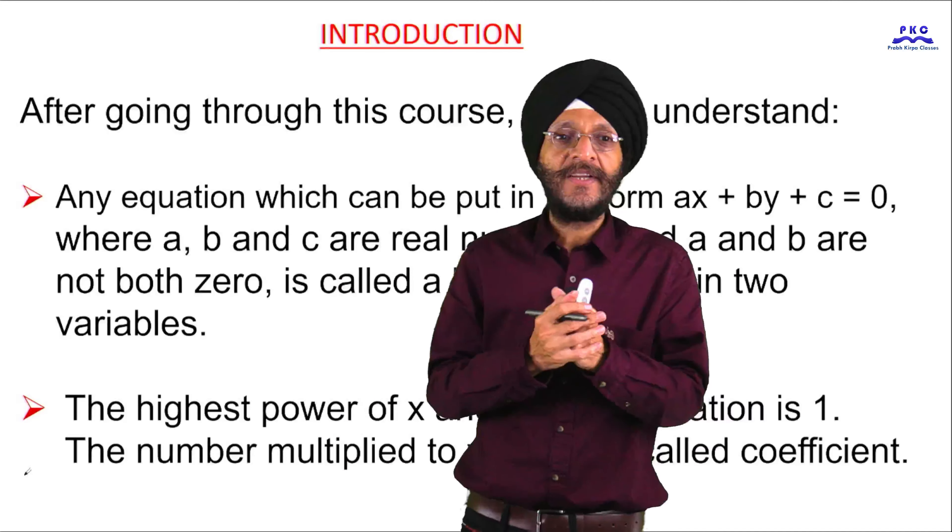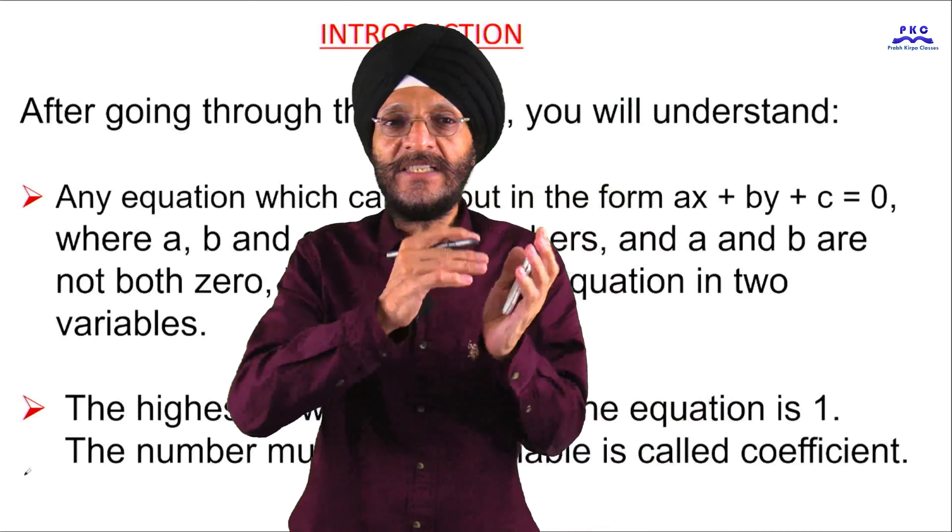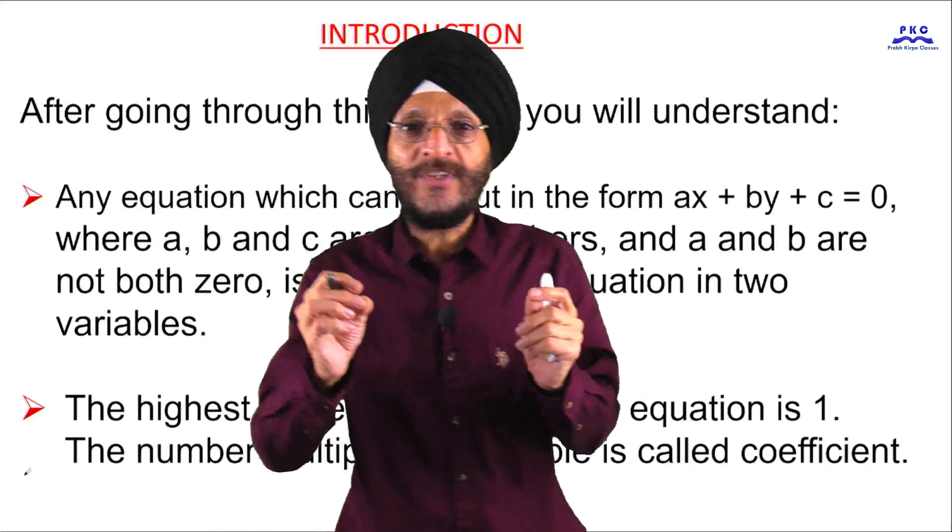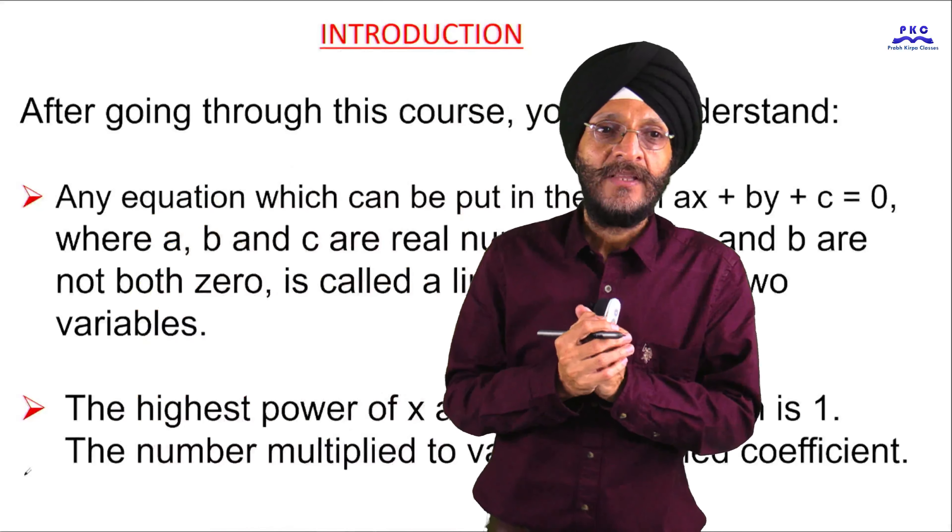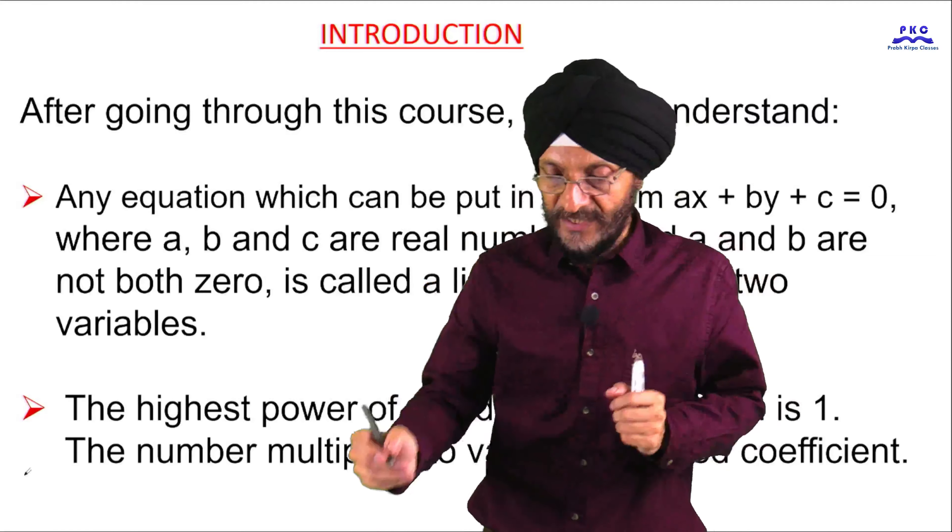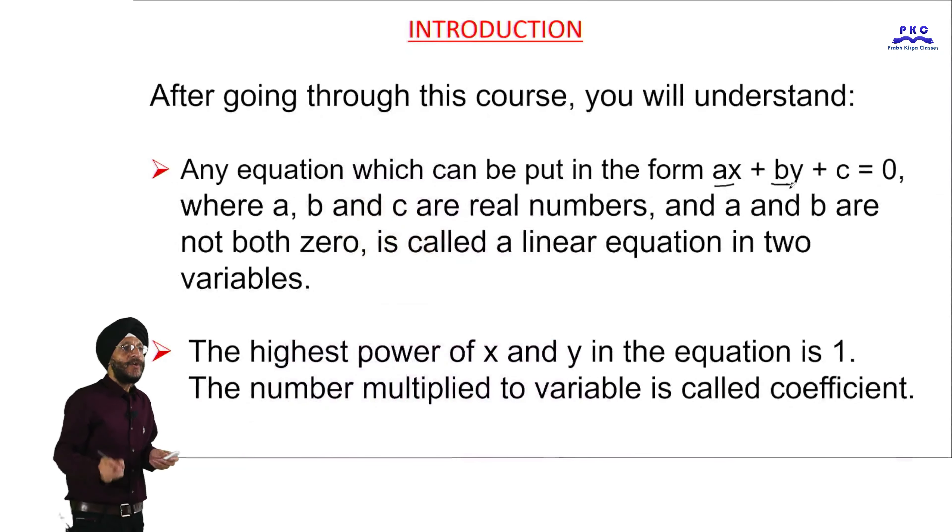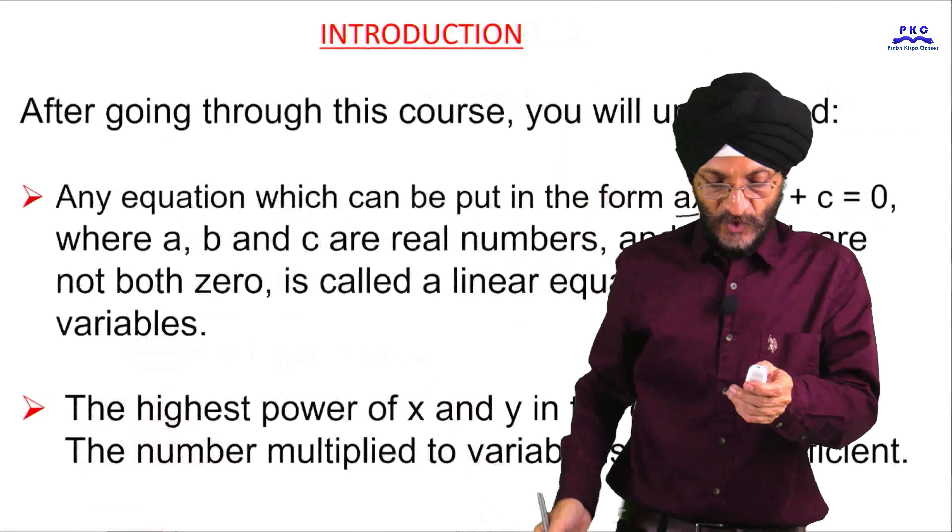It is to be noted here that the power of the 2 variables, that is X and Y, in the equation is 1. The number multiplied to the variable, that is in this case A and B, is called coefficient and C is constant.